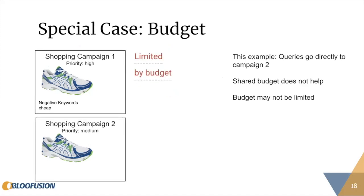Another important constraint: you have to make sure your budget is not limited. If the first campaign is limited by budget, queries will go to campaign two instead. I used to recommend a shared budget to combat this, but a shared budget doesn't actually help. You have to make sure your higher-priority campaigns are not budget-limited, because otherwise the system breaks down.